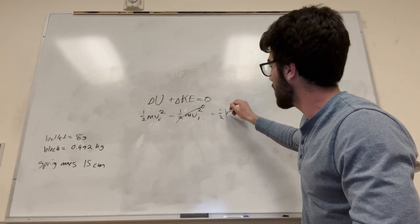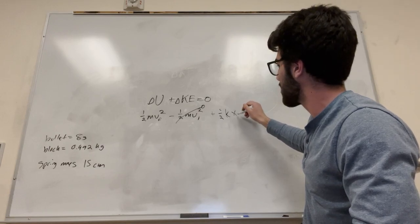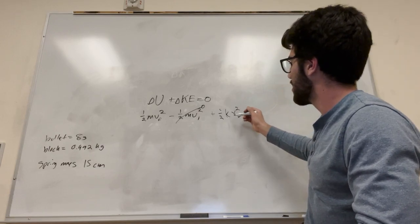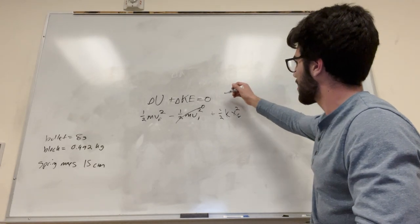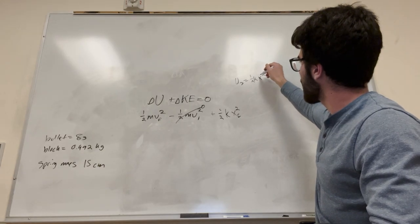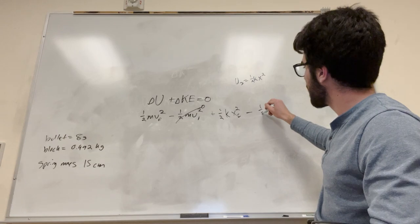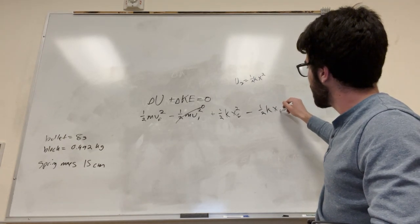This is the spring constant times the change in x final squared. This is the formula for U spring equals one-half k x squared. Right? That's what we're using for this part. And then we're going to also subtract that from one-half k x initial squared.